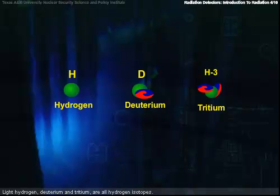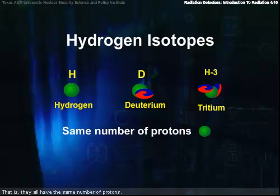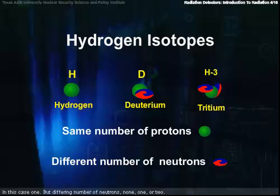Light hydrogen, deuterium, and tritium are all hydrogen isotopes. That is, they all have the same number of protons, in this case one, but differing numbers of neutrons: none, one, or two.